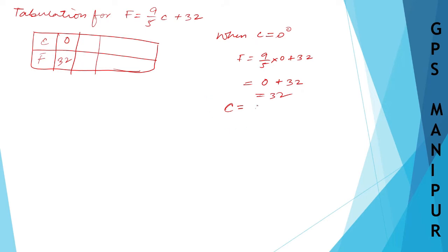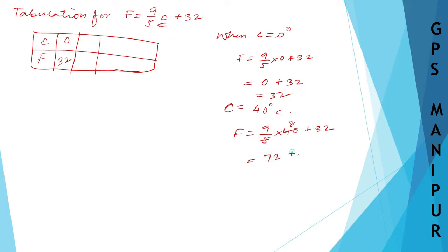When C = 40°C, Fahrenheit = 9/5 × 40 + 32. 5 divides 40 giving 8, and 8 × 9 = 72. So 72 + 32 = 104°F. Therefore 40°C equals 104°F.